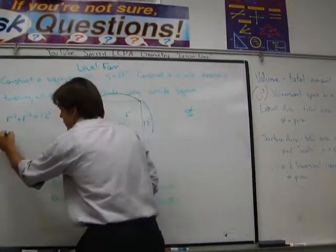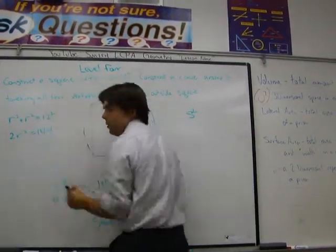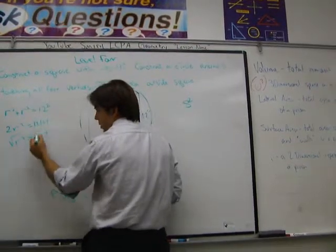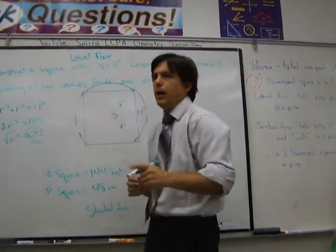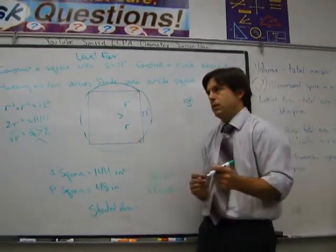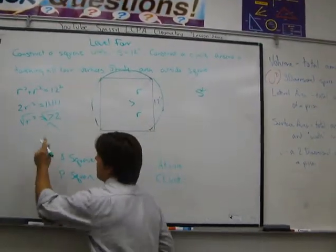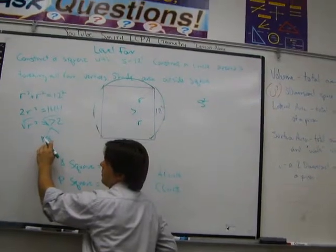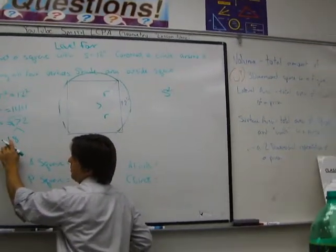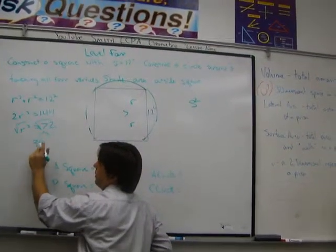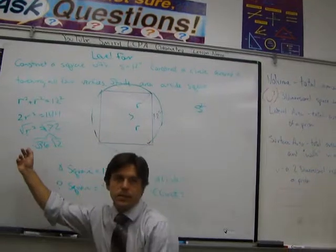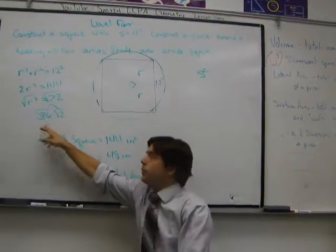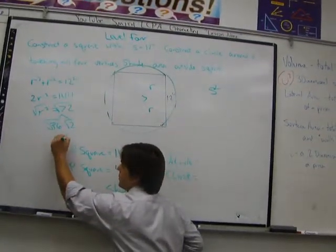So then, 2R squared equals 144. Therefore, R squared equals 72. Therefore, R equals the square root of 72. I'm looking for a perfect square in that 72. Anybody? Nine times eight is good, but there's a better one. Even better. 36. There we go. 36 and 2. It's always a good idea to try to divide it by 2. Because if you can, a lot of times, your perfect square will jump out at you. Therefore, R equals 6 square root of 2.